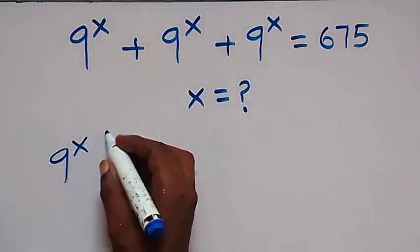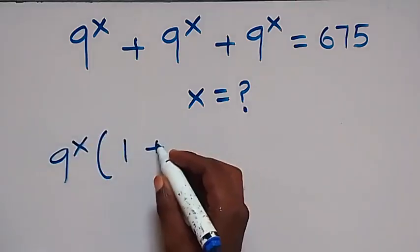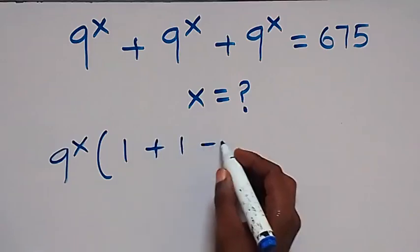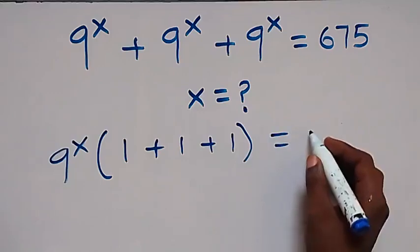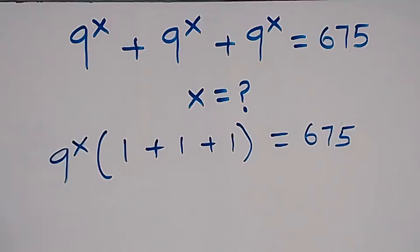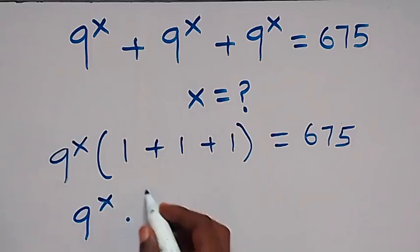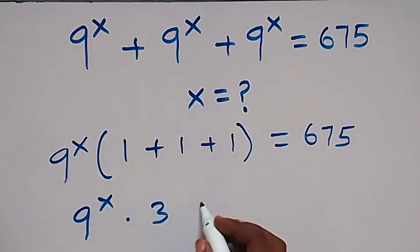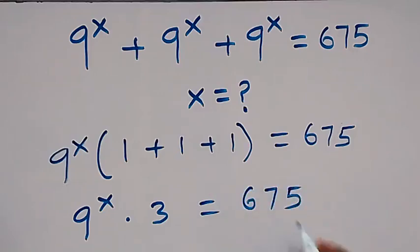And then this will mean one plus one plus one left here, which equals 675. So this gives us 9 to the power x multiplied by 3 equals 675.